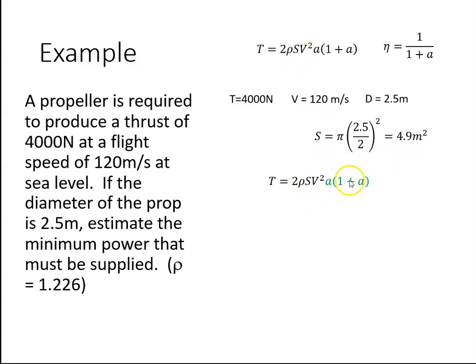I now have 2 rho, S, V and T. So I need to get a as it's the only unknown. When I multiply that out, I get a squared plus a.